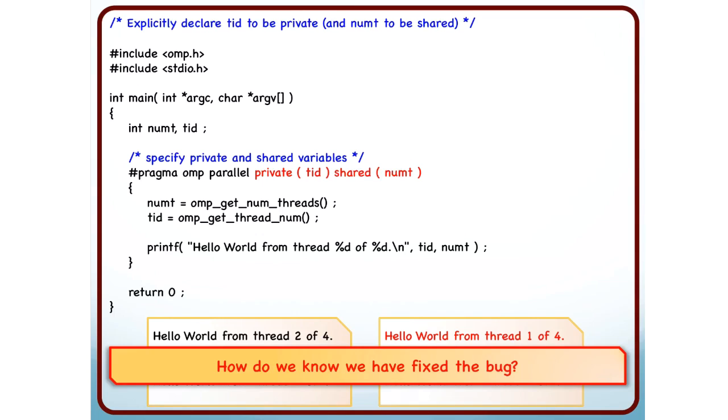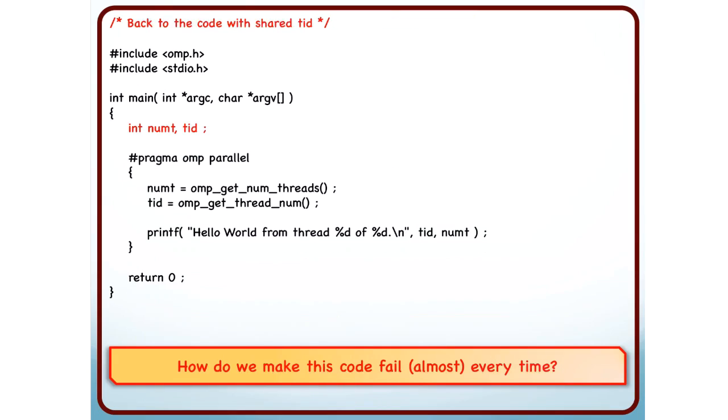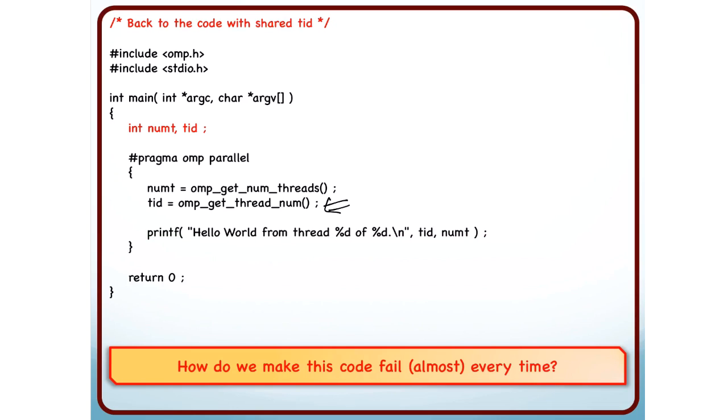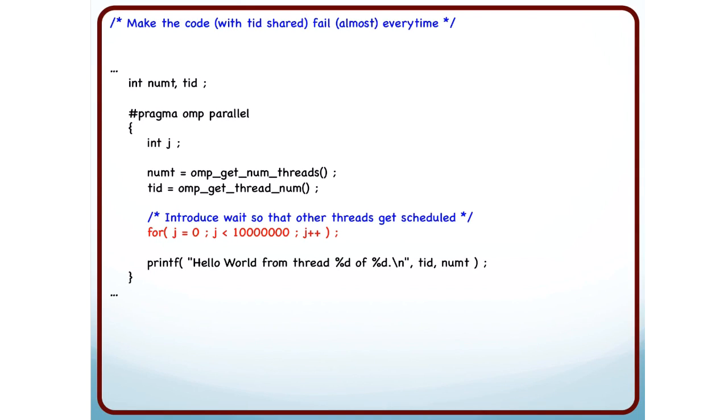But how do we know for sure that we have fixed the bug? When a race condition exists, sometimes it happens, sometimes it does not happen. So you should try to figure out how the race condition is happening, and then you can test out whether that race condition is for real or not. So let us go back to the code where NumT and TID were shared, this is the buggy code. So how can I make this code fail every time? Why does this code fail? After I fetch the thread ID, and before I have printed the value of TID, some other thread gets scheduled. How can I make this program fail every time by introducing some statements? We can make a multiple distance between the sequence of assigning the TID value and printing.